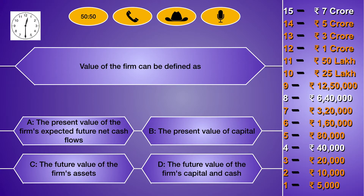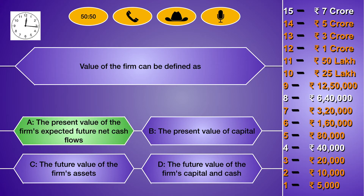The value of the firm can be defined as: option A, the present value of the firm's expected future net cash flow. The answer is: the present value of the firm's expected future net cash flow.